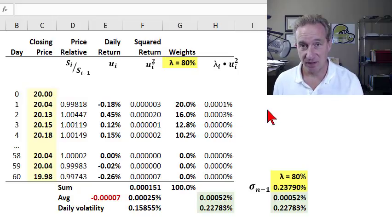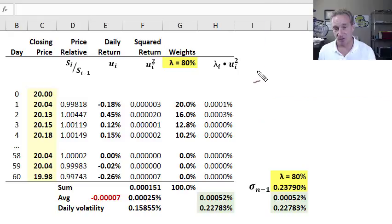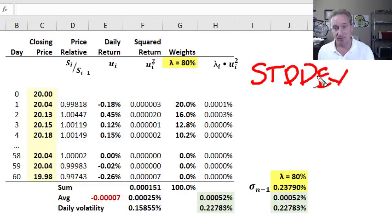My previous video illustrated the most common and basic approach to estimating volatility with the historical standard deviation approach. If we want to take one step up the ladder in sophistication, then we can use the exponentially weighted moving average, abbreviated EWMA.